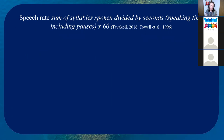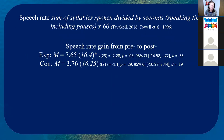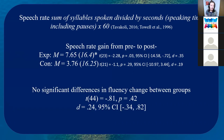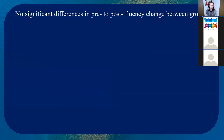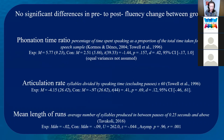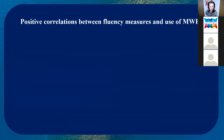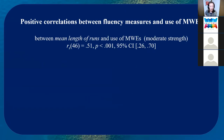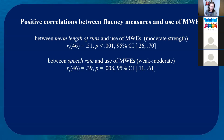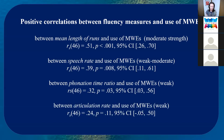For speech rate measured from the dialogue task pre to post test, there was a difference in the experimental group but not in the control group. However, when compared against each other, there was no significant difference in fluency changes between the two groups. There were also no significant differences in pre to post fluency change in other measures. However, there were positive correlations between fluency measures and use of multi-word expressions — the strongest being between mean length of runs and use of multi-word expressions, followed by speech rate, phonation time ratio, and articulation rate.